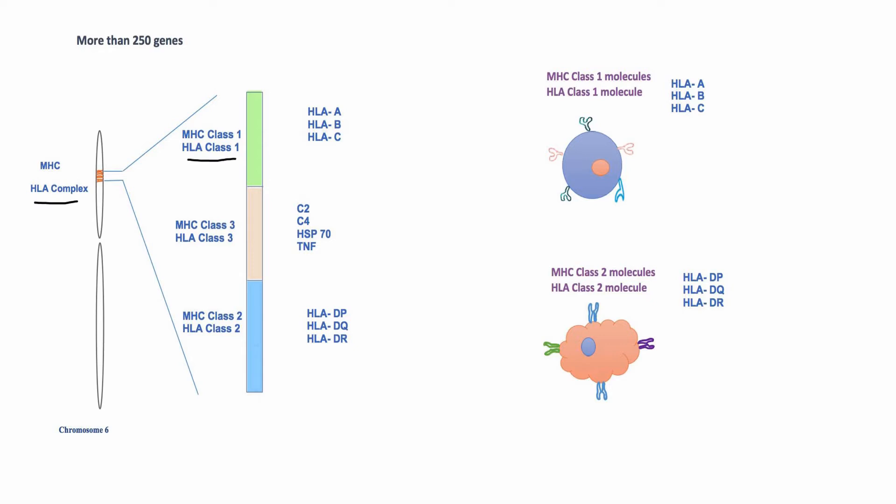There are three classical genes in HLA class 1 region that are HLA A, B, and C. These genes encode HLA class 1 molecules that are present on surface of all nucleated cells. These three genes encode three HLA molecules that are HLA A, B, and C.